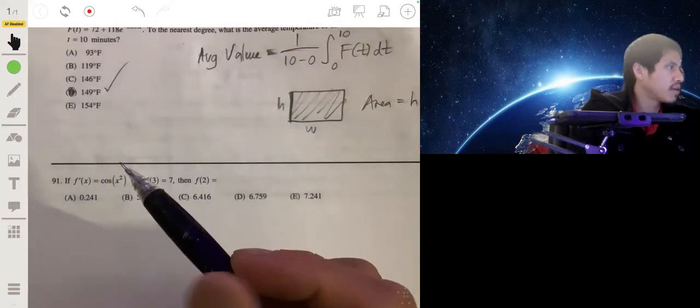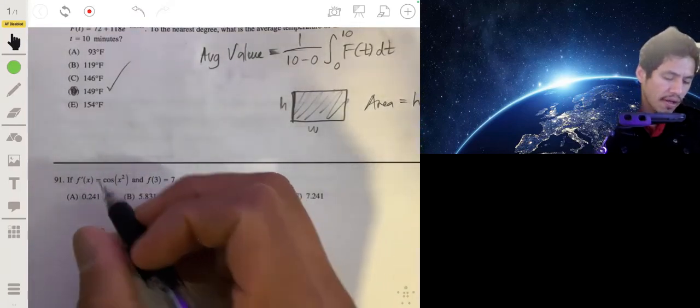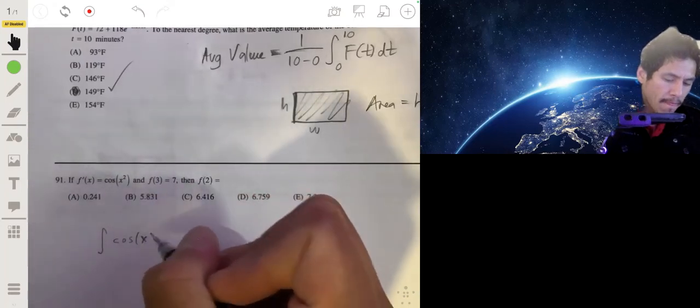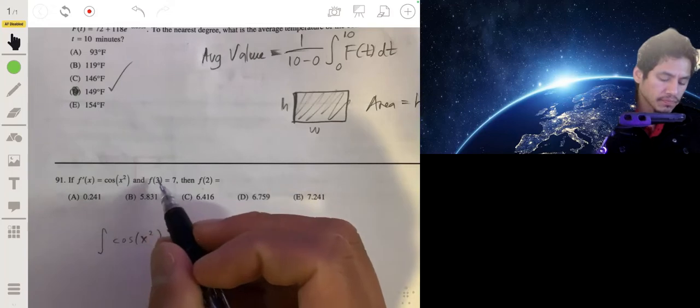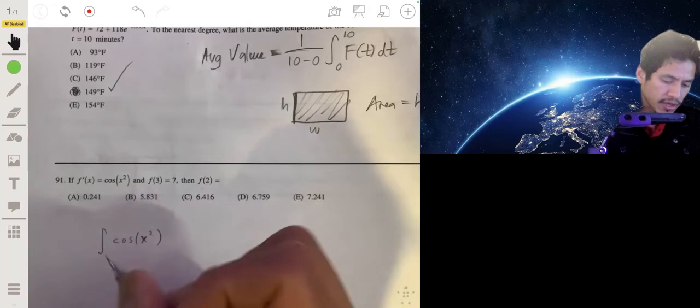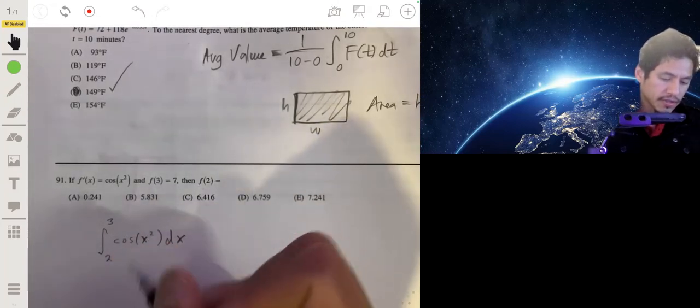What I would initially do is integrate. When you integrate, you go back to the function. So if we integrate cos(x²) from 2 to 3, since this is our derivative, we would end up getting the original function.